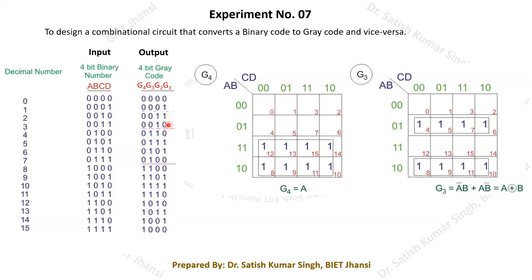The next gray code is 0010, where only the LSB changes from 1 to 0 and all other bits stay constant. Moving further, the third bit changes from 0 to 1 while the rest remain constant. This way we write all gray codes, keeping in mind that only one binary bit change occurs when moving to the next gray code.